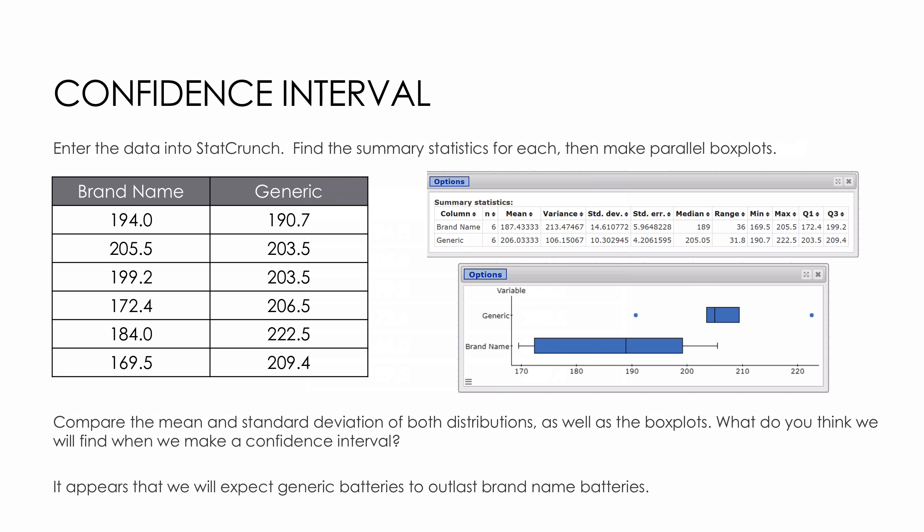Just looking at these box plots and the mean and median of each of my values, it seems pretty clear, particularly with the box plot, that I'm going to expect generic batteries to outlast the brand name batteries. I haven't done a statistical test to prove that, but it looks pretty clear from the picture.